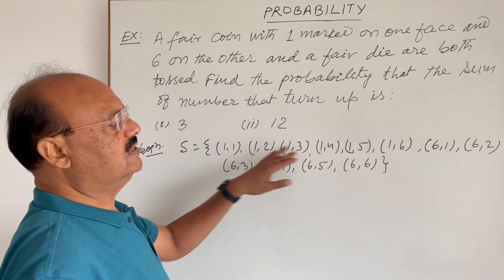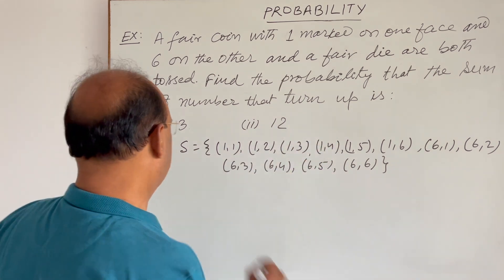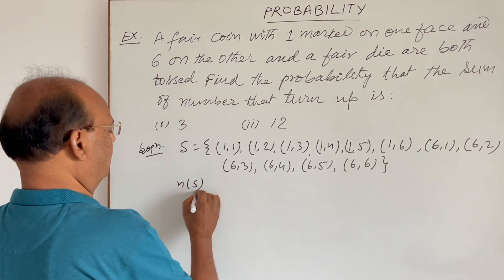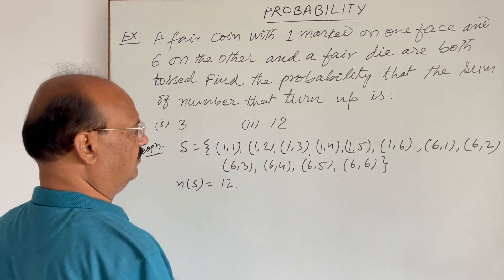So, total elements are here twelve. So, therefore, n(s), number of elements in this sample space is twelve, correct?